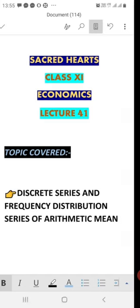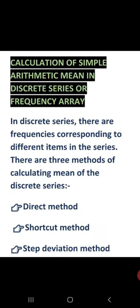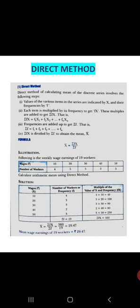We will cover both these series. In discrete series, there is a frequency corresponding to different items in the series. There are three methods of calculating the mean of discrete series: direct method, shortcut method, and step deviation method. The formula for direct method is mean equals to sigma fx upon sigma f, where f denotes frequency and x denotes various items in the series.